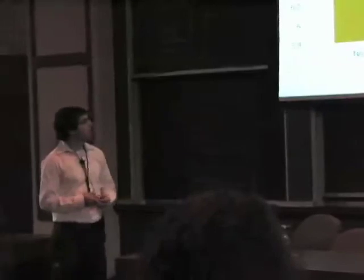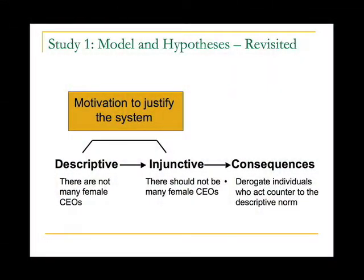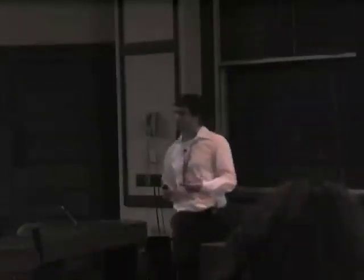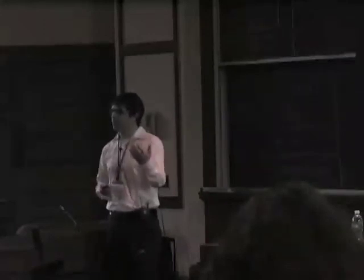The experimenter is completely blind to the hypothesis and condition — she doesn't know any of this. Those results are quite impactful. When this motivation is raised, people turn the descriptive norm that there are not many female CEOs into what they think should be the case, and that 'should' has very important consequences — including derogation of individuals who counter that norm. In other studies, we find a counterintuitive effect: the more inequality we indicate exists, the less people are willing to support policies helping women gain entry into business positions, because strengthening the system justification motive makes people feel the status quo is how things should be.